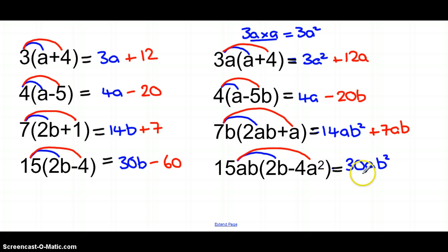And then finally, 15ab times negative 4a squared. Again, doing this step by step, it's a positive times negative, it's going to be take away. 15 times 4 is 60, a times a squared, so a times a times a is a cubed, and then we've got the b that we've been multiplied by as well.